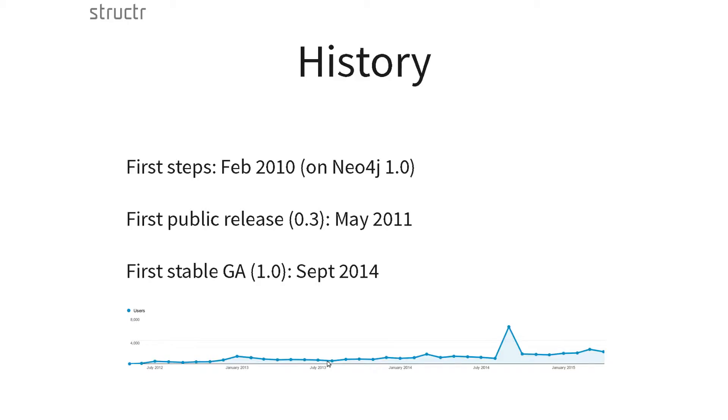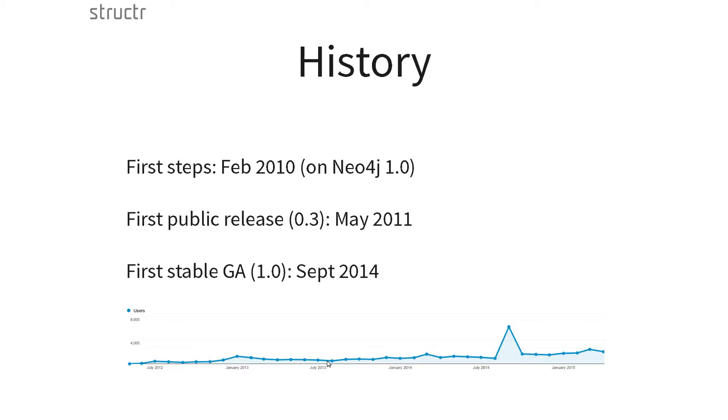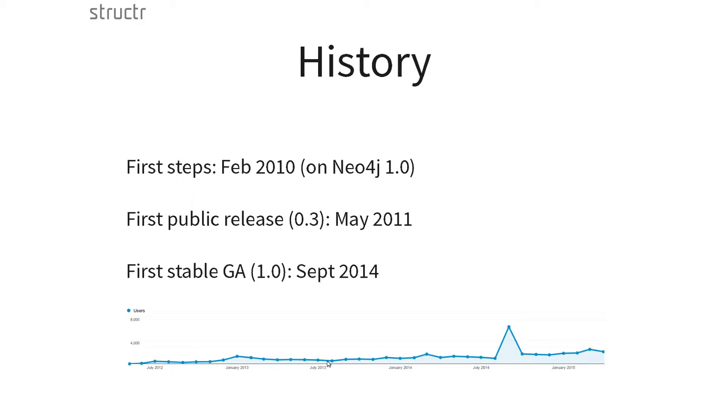We made the first steps with Neo4j 1.0 back in 2010. February 2010 was the first line of code written. The first public open-source release was in May 2011, version 0.3. Last year in September we released the first stable general availability milestone. You can see from our website traffic that users accessing the site increased over time, with a particular peak in that month. From a technical perspective it was a bit disappointing — it didn't even show a real peak in CPU utilization. Structr can happily serve thousands of requests per second.